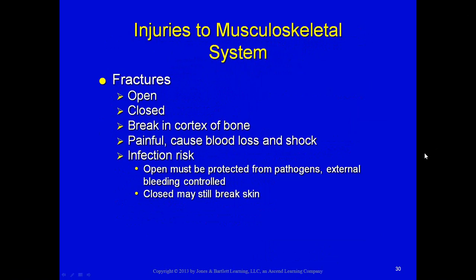Injuries to the musculoskeletal system include open and closed fractures and breaks in the cortex of the bone. Fractures are painful — most people can point right to where the break is, what we call point tenderness. They may have heard a pop, crack, or split. Because a nerve, artery, and vein run along long bones, there can be blood loss, and with femur fractures, blood loss could be significant enough to cause shock.